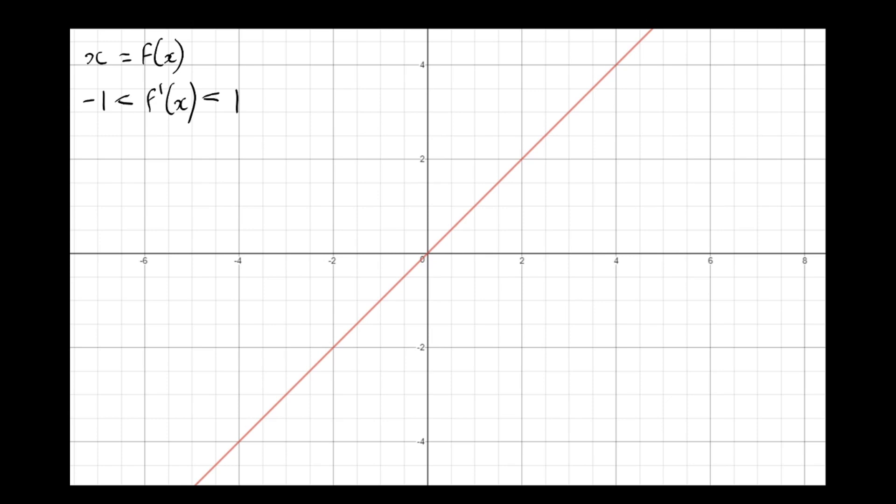So let's illustrate by means of a diagram what this actually means. So let's make f(x) clearly have a gradient of between minus 1 and 1. So, for example, this line here.